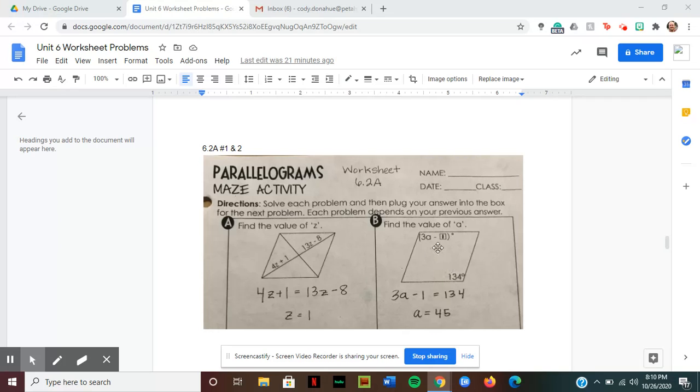These two angles are opposite one another, so I'm going to set them equal to each other. 3a minus 1 equals 134. Add 1 to get 3a equals 135. Then divide both sides by 3, and you get a equals 45.